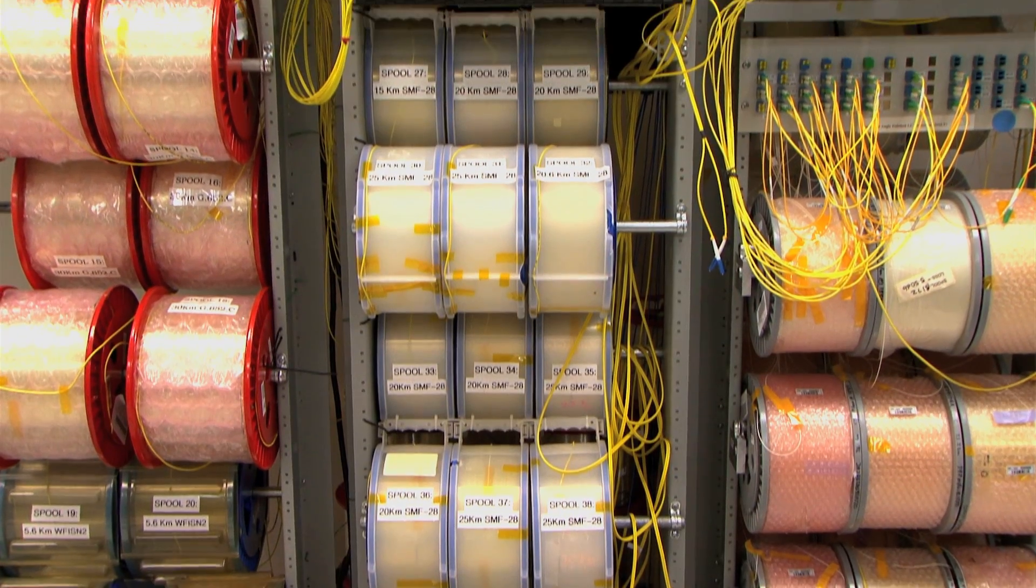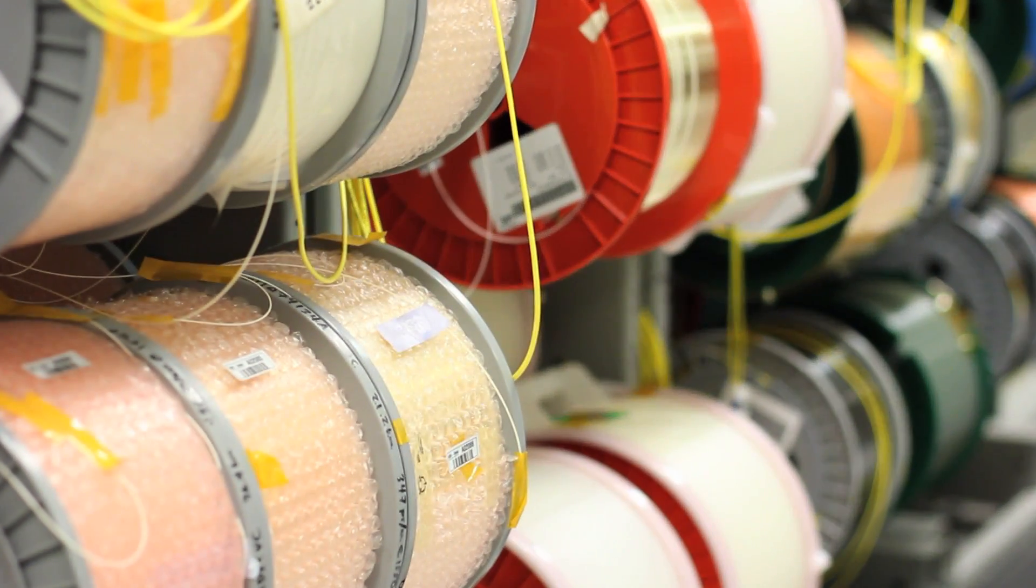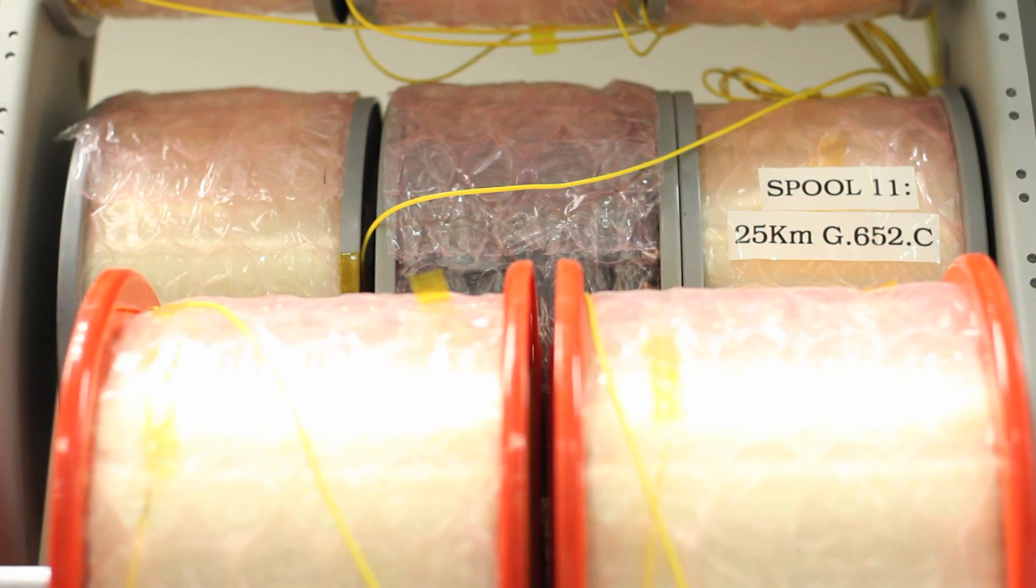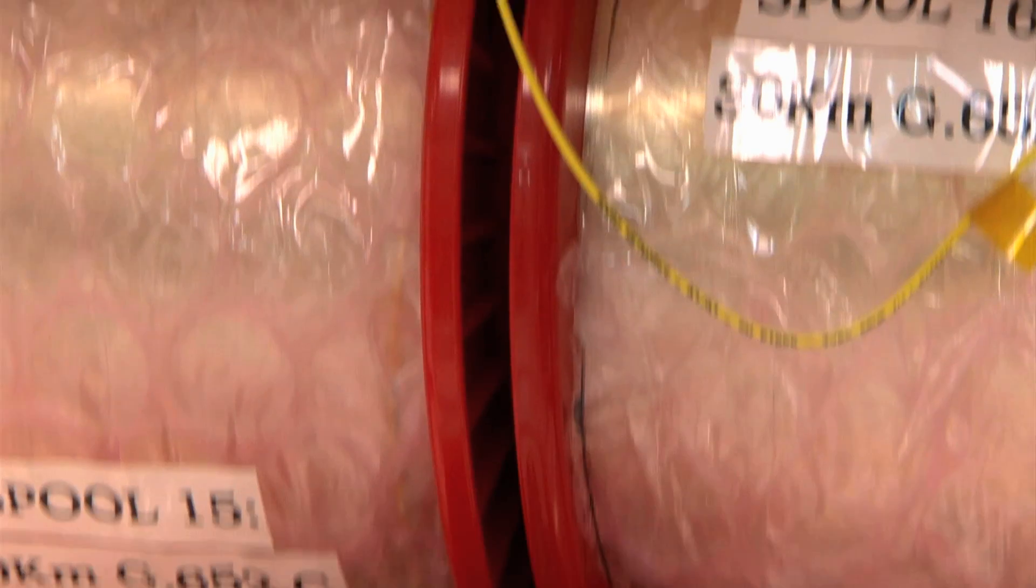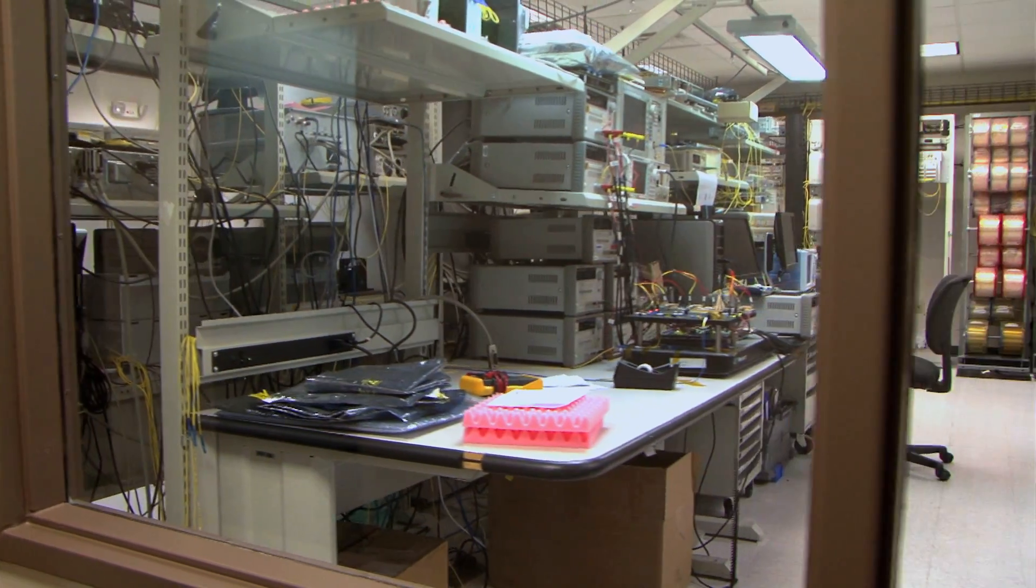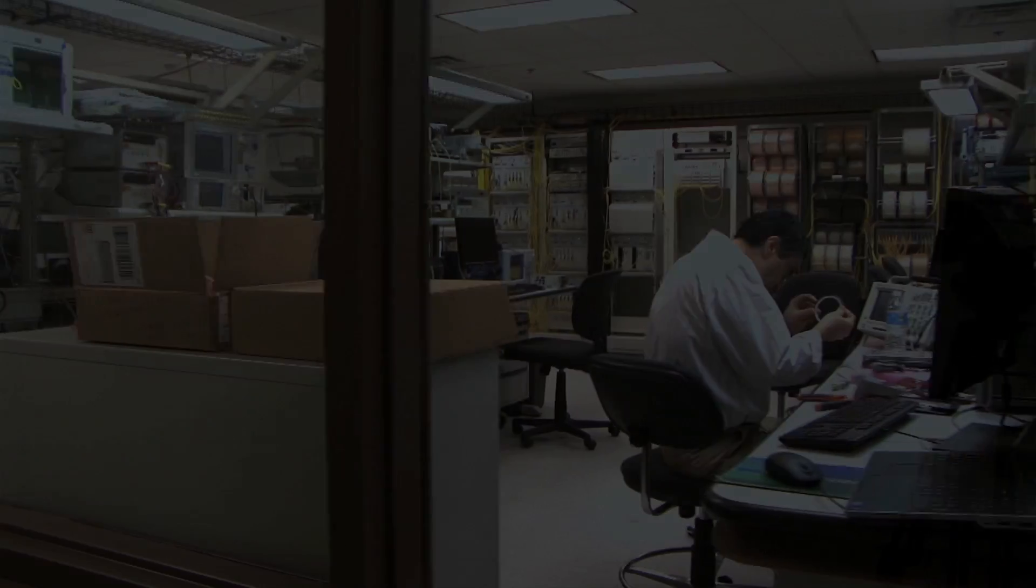We often see demonstrations of long-haul transmission performance using very new fiber types. What we have done is actually a demonstration of 2,500 kilometers over older fiber types that are very common in carrier networks. These include the older standard single-mode fiber, TrueWave Classic, TrueWave Reach fiber and also LEAF fiber. And these are more challenging for long-haul transmission due to the higher non-linear effects. Yet we demonstrated 2,500 kilometers with a very good operating margin.